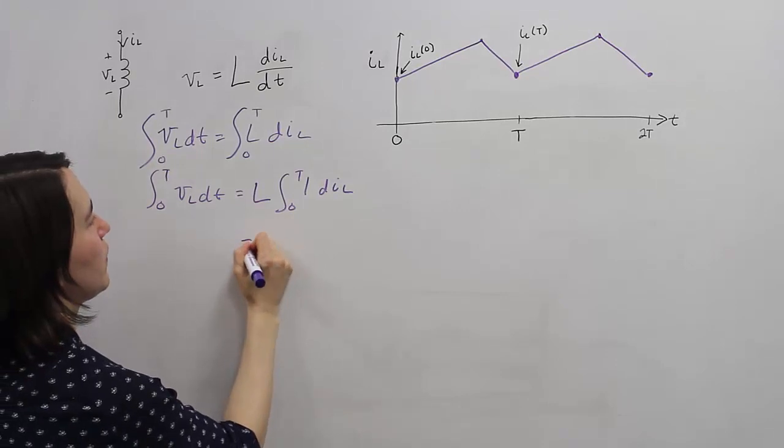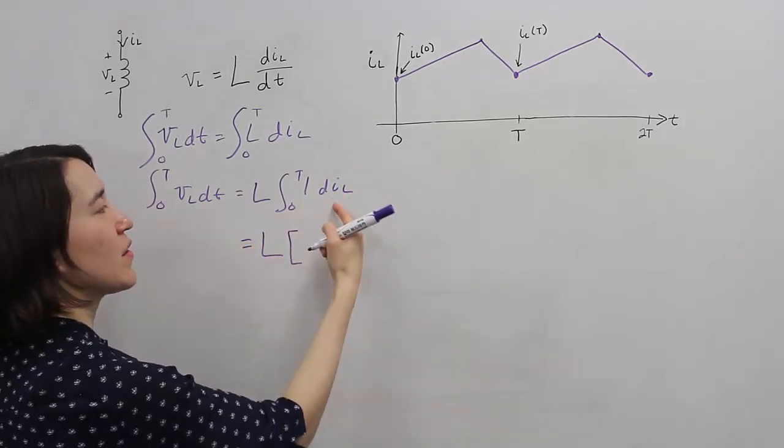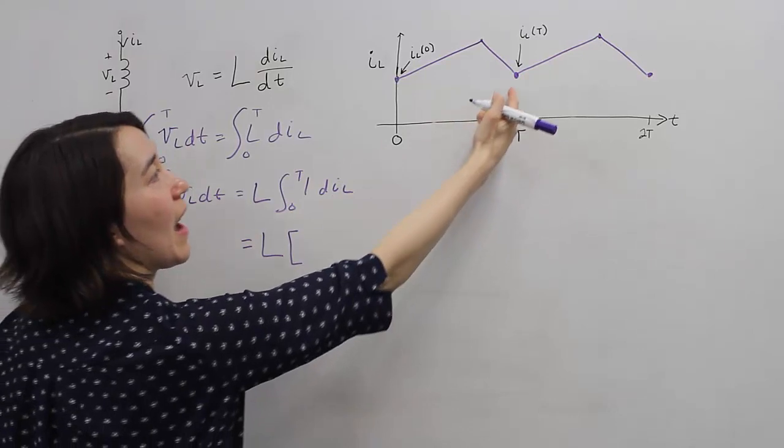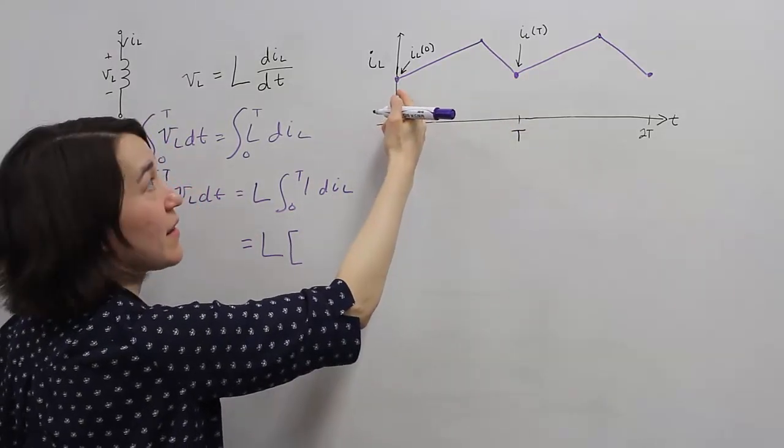We integrate this, and we'll find that this value is going to be i_L evaluated at T and then i_L evaluated at 0.